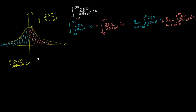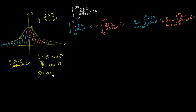So we can make the substitution that x is equal to 5 tangent of theta. Since we'll have to reverse substitute later, we can also put in the constraint that x over 5 equals tangent of theta. So if we want theta expressed as a function of x, theta is equal to arctangent of x over 5. These two statements are completely consistent with each other.